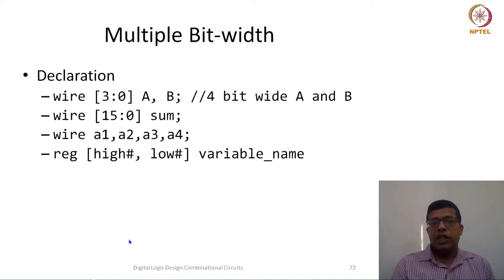First thing is declaration. We can define like regular wires and registers. Whenever we are defining wire, in the square bracket we write what is the bit width. We write what is the high number of the bit and this is the low bit. Whatever we are writing here will become most significant bit, whatever we are writing here becomes least significant bit.